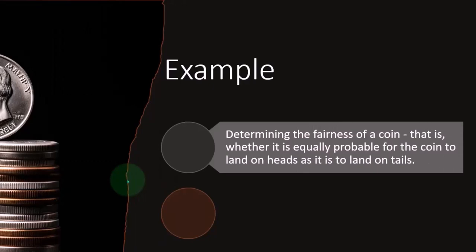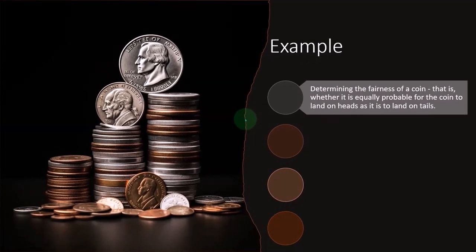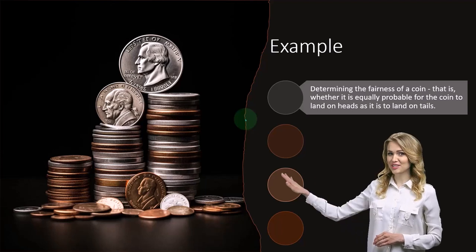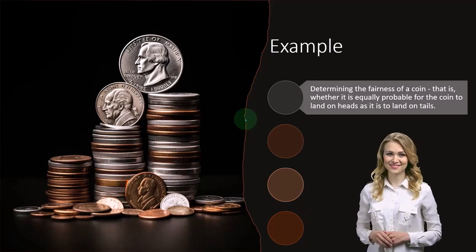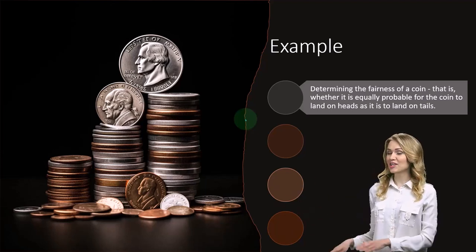And the null assumption oftentimes would be things are going to be as is, the standard type of assumption. And then it would be more unusual generally if the coin did not land, statistically speaking, on a 50-50 chance.